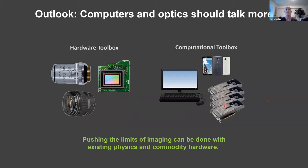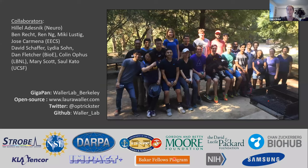That's the end of my talk. I like to go back to the big picture: computers and optics should talk more. One of the big themes in my lab is trying to make new imaging systems that can do new things without fancy hardware or new physics, and trying to make it very accessible and reproducible so that other people can do this themselves in their own labs. We've tried hard to make all our stuff reproducible — not just posting code online, but using cheap and easy-to-access devices and leaving instructions on our open-source website. We'd be very happy to help anyone who wants to attempt any of these in their own lab.